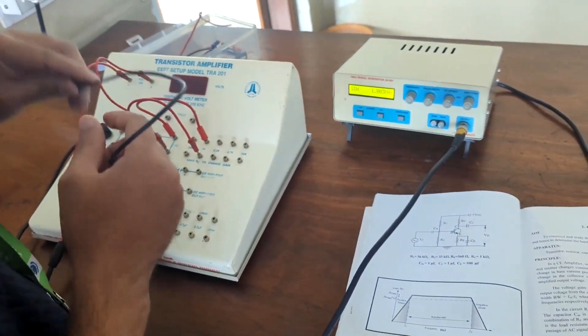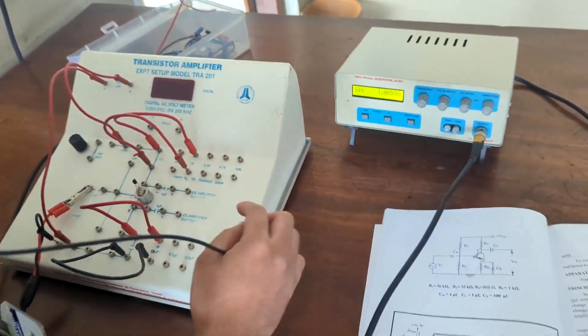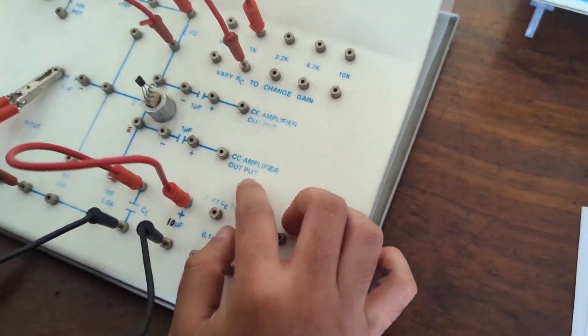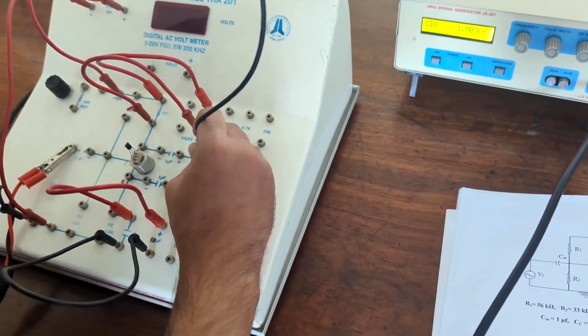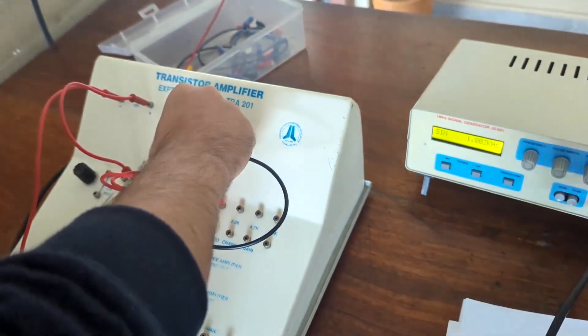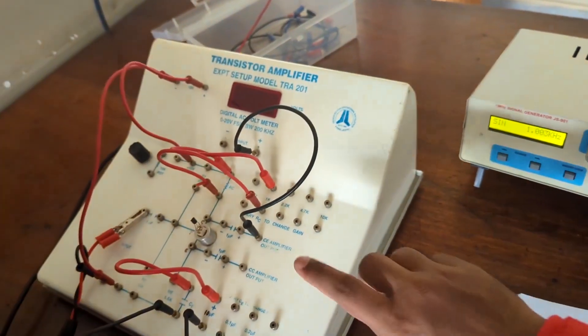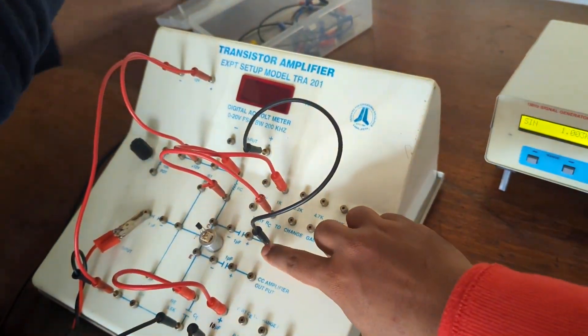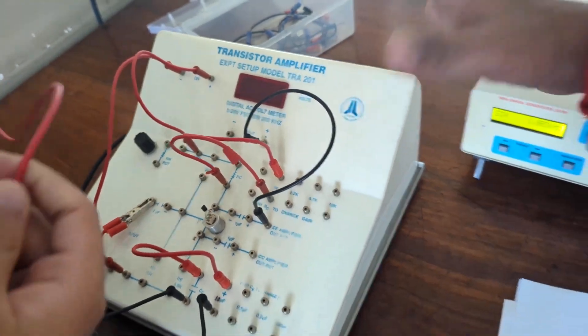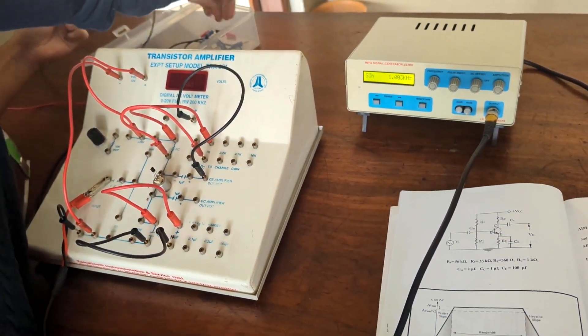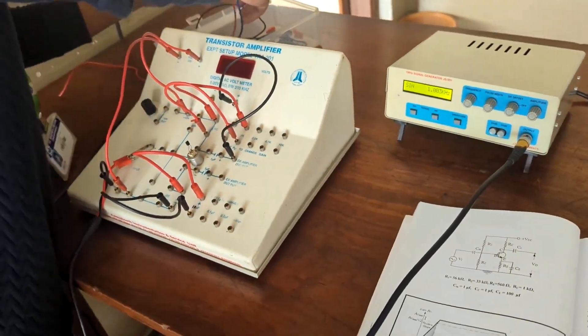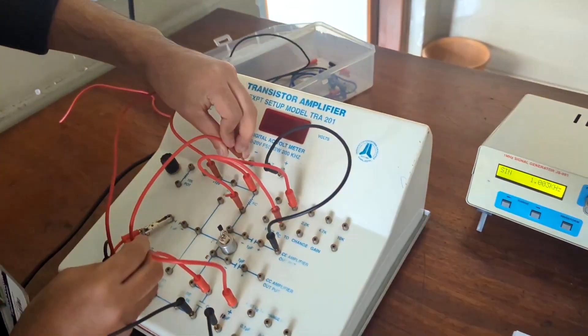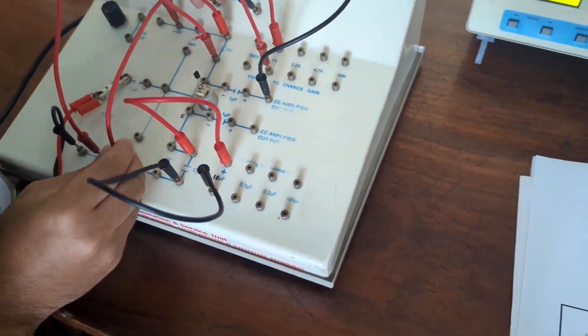And next, just like CC amplifier you connect. See here it's CC amplifier output. This is CE amplifier output. For CE amplifier you connect it to CE amplifier output to the voltmeter. Just like the biggest one. You are measuring the output voltage. So CE output you have to connect it to the voltmeter. And the negative should always go to the ground. Next the negative has to go to the ground.